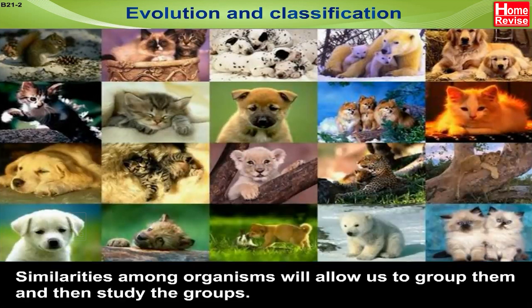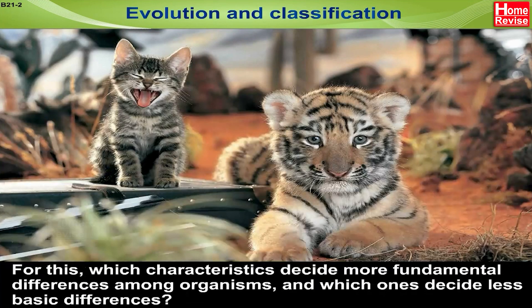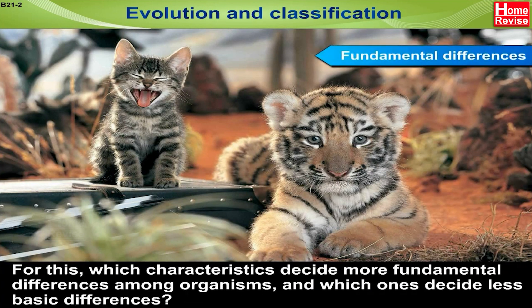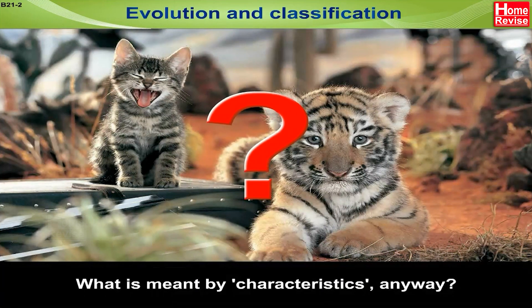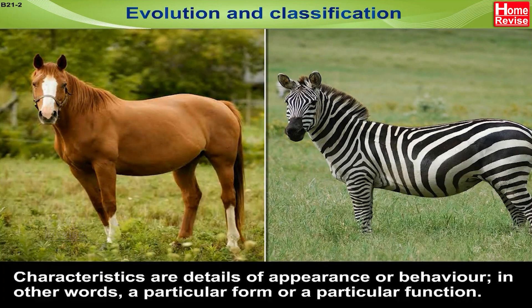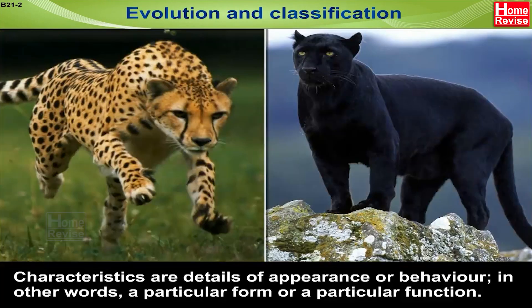Similarities among organisms will allow us to group them and then study the groups. For this, we need to find out which characteristics decide more fundamental differences among organisms and which ones decide less basic differences. Characteristics are details of appearance or behaviour — in other words, a particular form or a particular function.